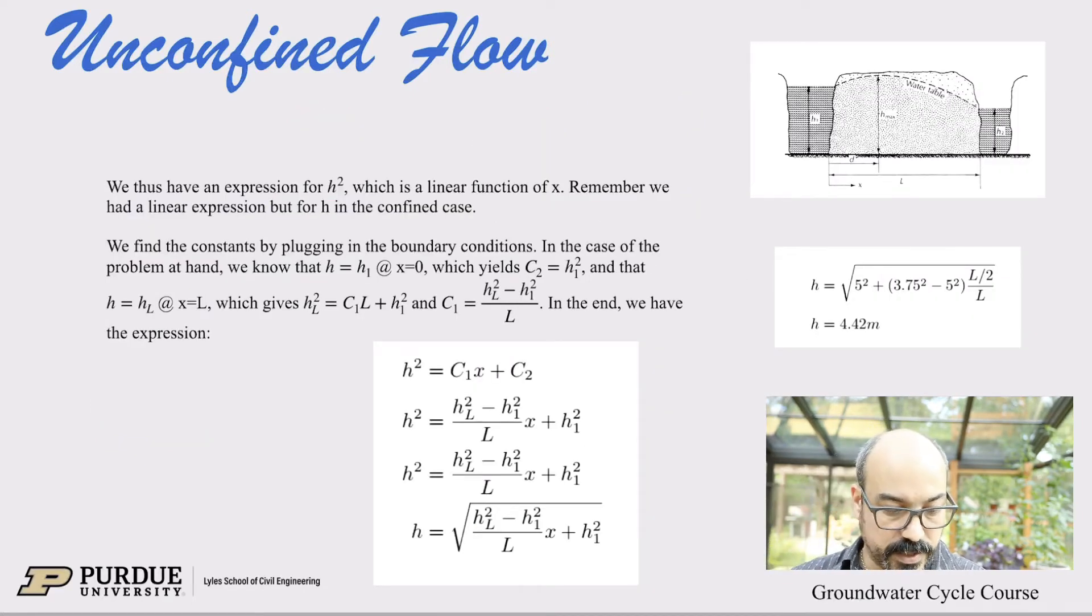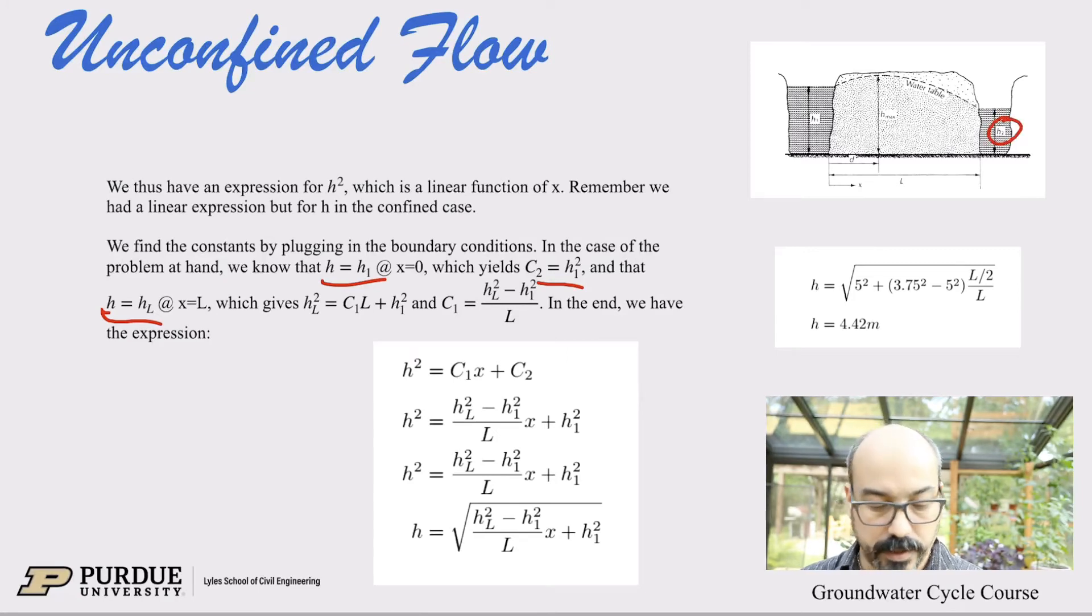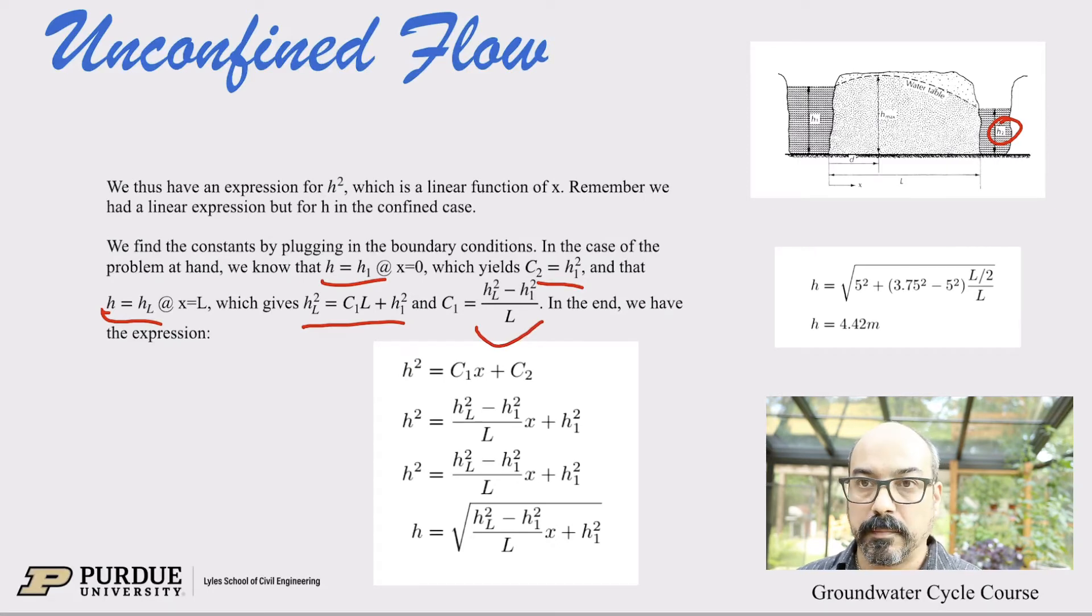So this is dx. There you go. So if we integrate those two things, the integral of dh² is just h², the variable c1 dx is c1 x and there's a constant of integration. So it's exactly the same as we did last time, except now the variable is h² instead of h. And finally, we can do the same tricks as before. We have that expression for h². So h² itself is a linear function of x. But before we had a linear function of x for h instead of h², so we find the constants by plugging in the boundary condition. So exactly the same process as the last lecture for the confined aquifer.